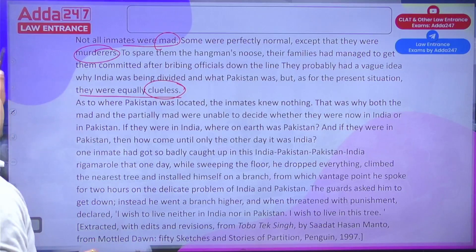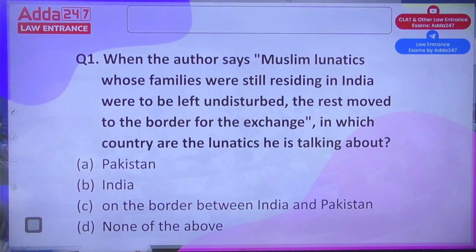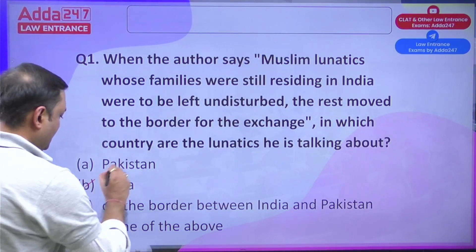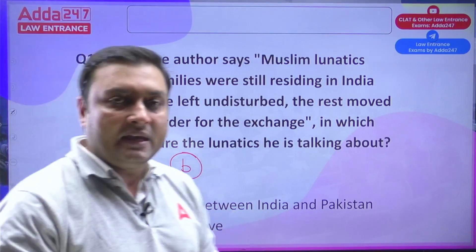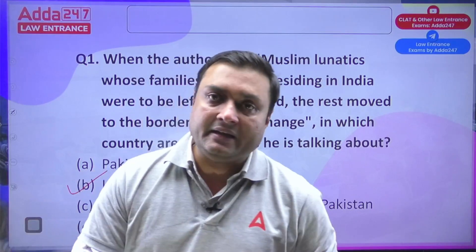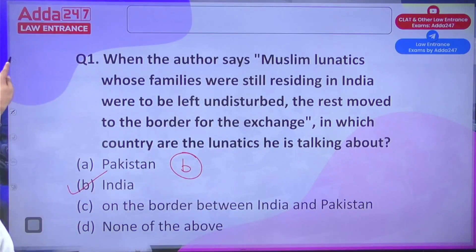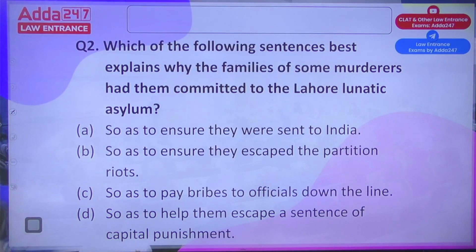When threatened with punishment, the inmate declared: 'I wish to live neither in India nor in Pakistan — I wish to live in this tree.' It's the kind of dilemma people faced — the lunatics didn't know whether they were in India or Pakistan. This is a narrative describing the situation after partition and its consequences. Let's look at the questions. First: In which country are the Muslim lunatics mentioned in the passage located?